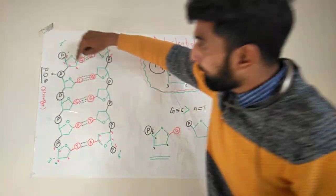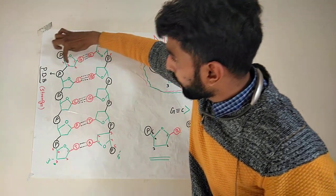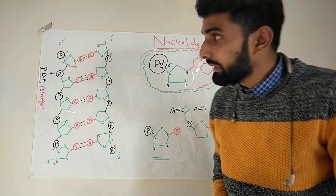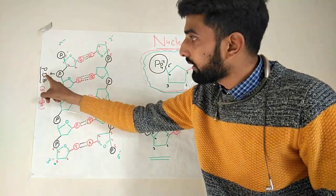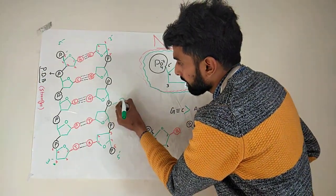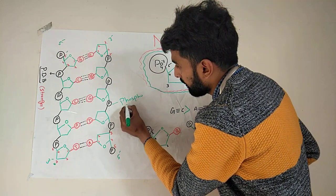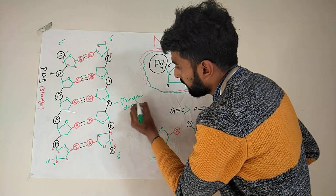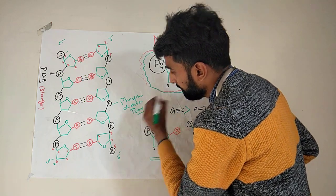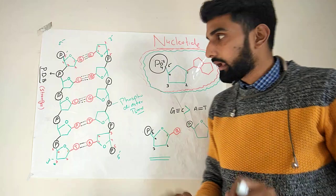Now, the bond that is formed between the phosphate group and carbon number three is called a phosphodiester bond. This bond is very strong.